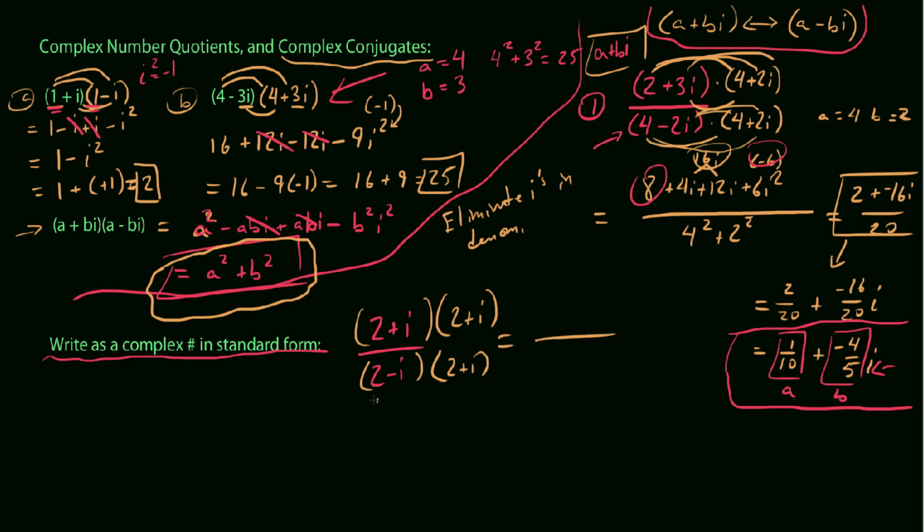So on the bottom here, we know this. If a, if this is like our a, and b in this case is negative 1, that's like negative 1, a is 2. We're going to get 2 squared plus negative 1 squared. So we end up with 5 in our denominator, essentially.